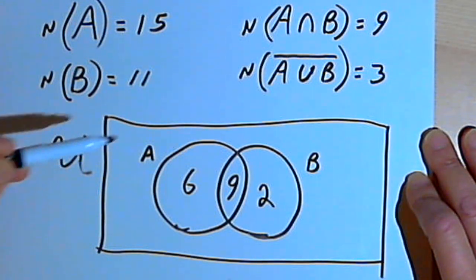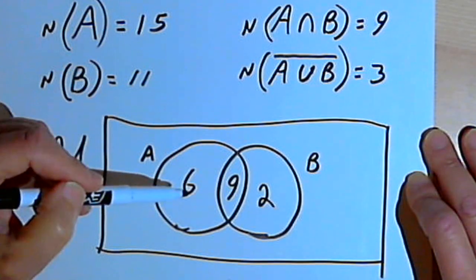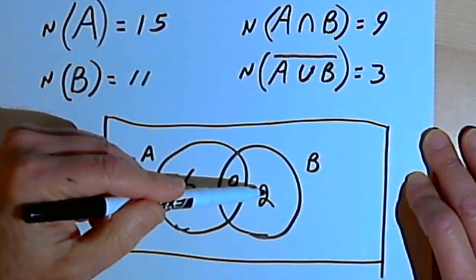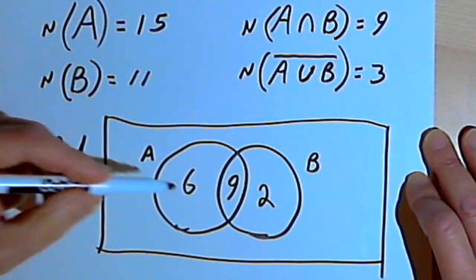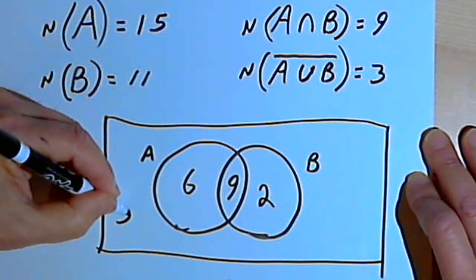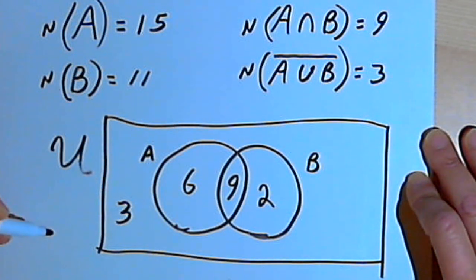I also know there are 3 students who are not taking either algebra or biology. So that's going to be the students who are outside of those 2 circles, here somewhere else in the universal set.